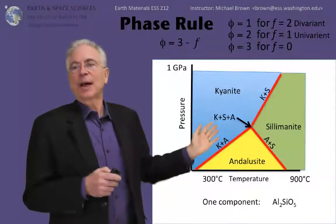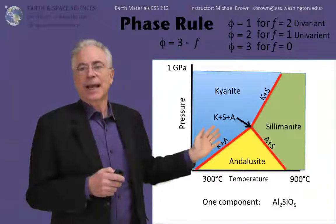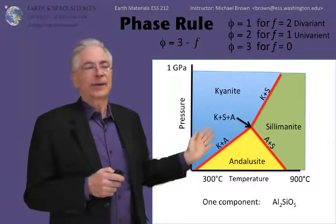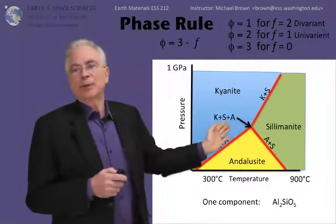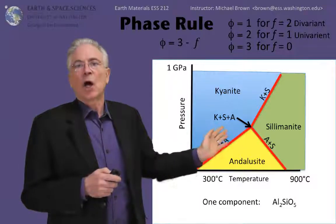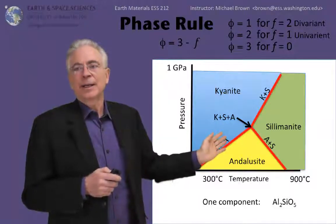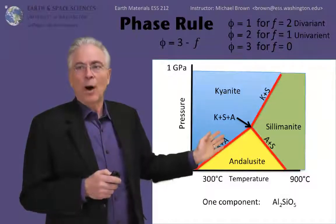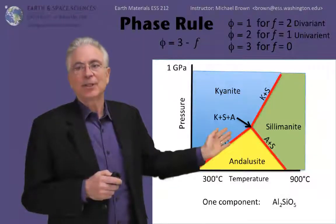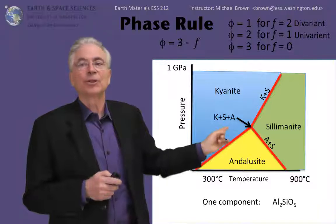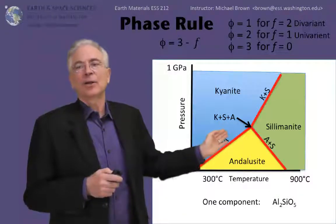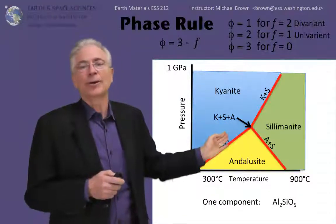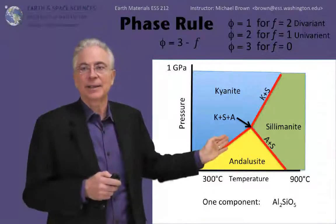Now if we come down to the line labeled K plus A, we have a phase boundary between kyanite and andalusite. Along the phase boundary, it is univariant. The degrees of freedom are one. If we change pressure, we have to change temperature in proportion to stay on the phase line. Along the phase line, two phases are in equilibrium, both kyanite and andalusite.